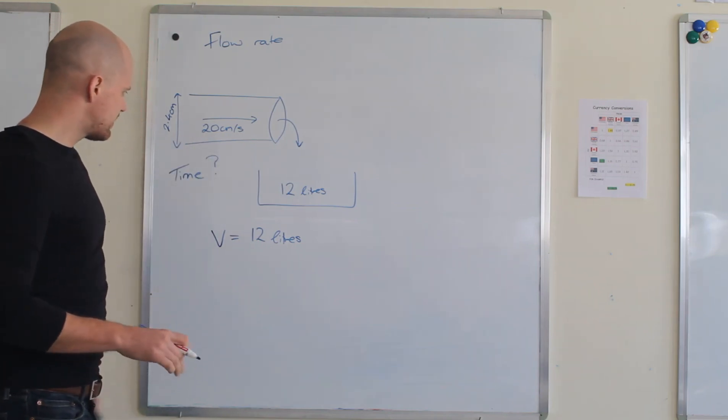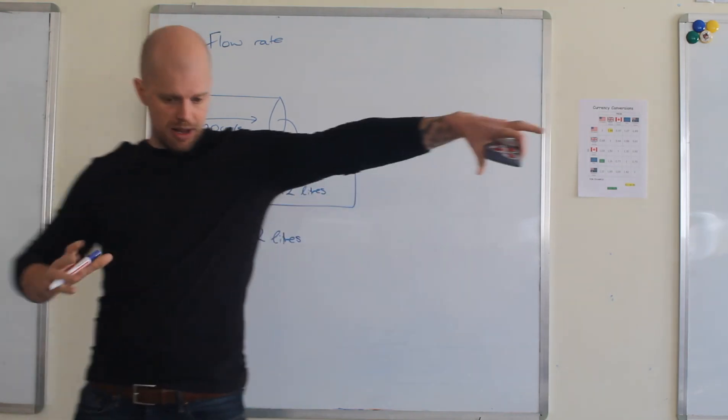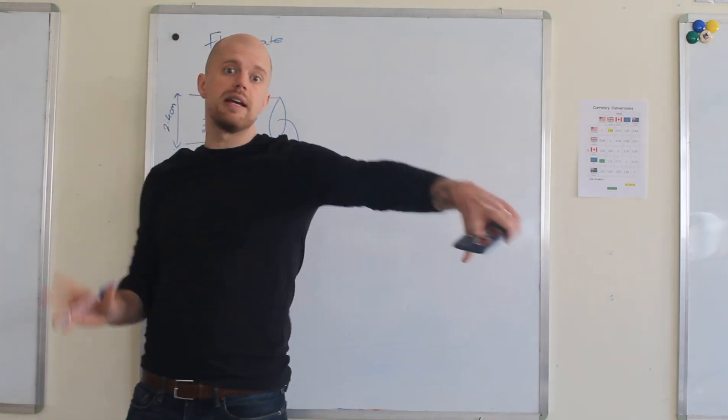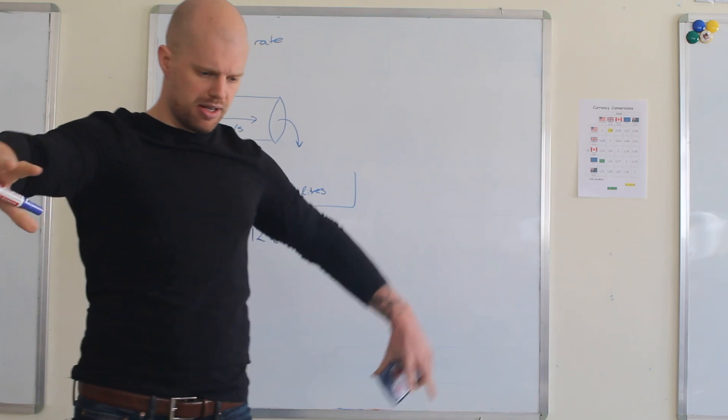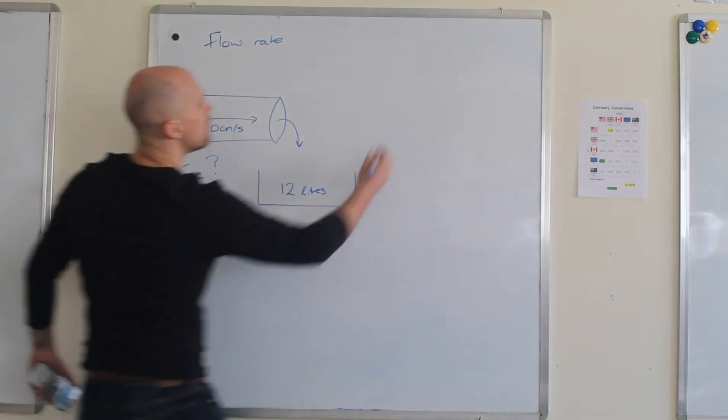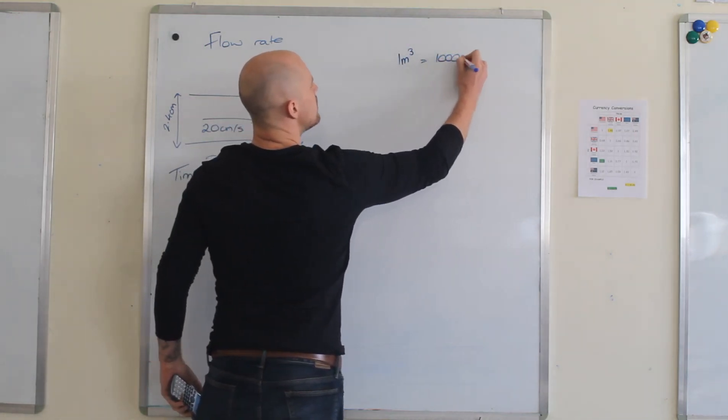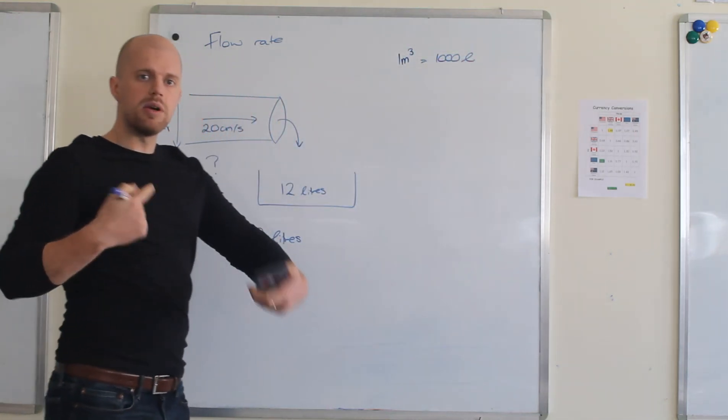Now the way I like to think of it is a meter is about here on me. So a meter by meter by meter is a really big space and you just need to remember that that is about a thousand liters. So I'll just put it over here. One meter cubed is a thousand liters.